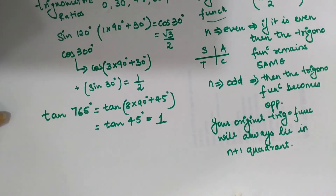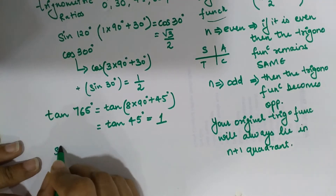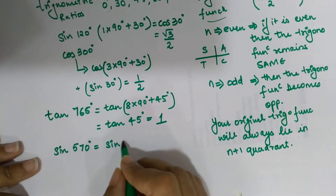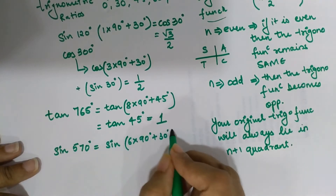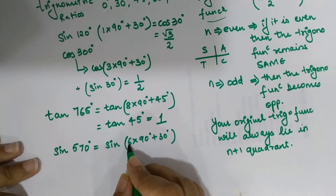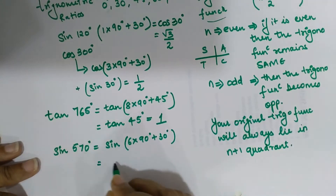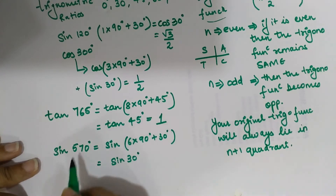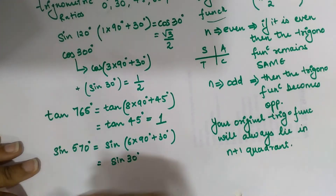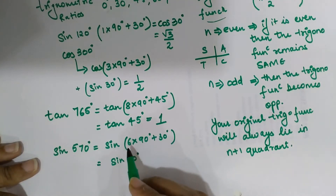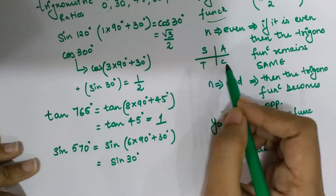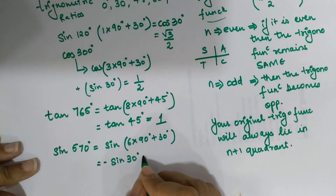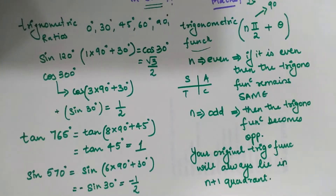Now let's find sine(570°). I can write 570° as 6 × 90° + 30°. Since n is 6 — even — sine remains sine. So we find sine(30°). The function lies in the (6+1) = 7th quadrant. The 7th quadrant corresponds to the 3rd quadrant, where only tangent is positive. So sine is negative here. The final answer is −sine(30°) = −1/2.